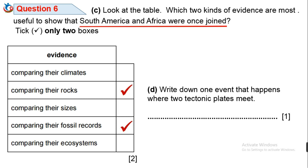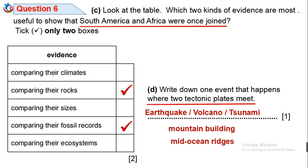Question 6d: Write down one event that happens when two tectonic plates meet. Several events happen where two tectonic plates meet. These include earthquakes, volcanoes, tsunamis, mountain building, and mid-ocean ridges. So many events happen when two tectonic plates meet.